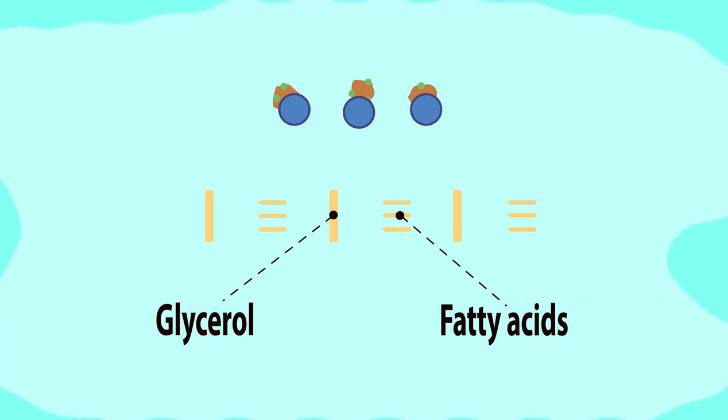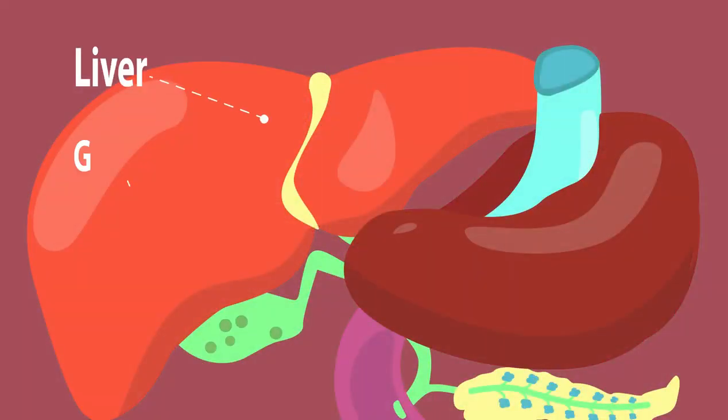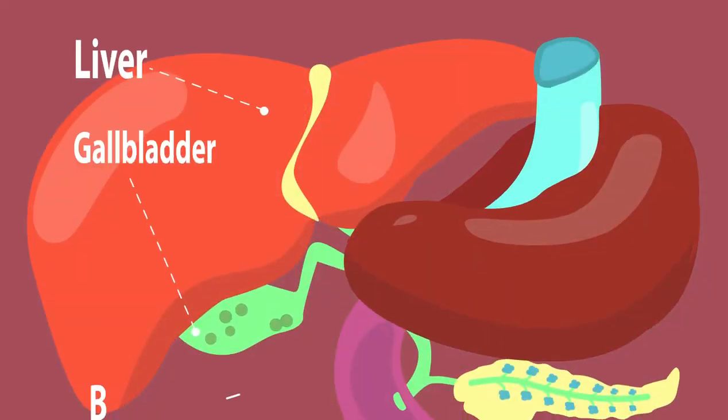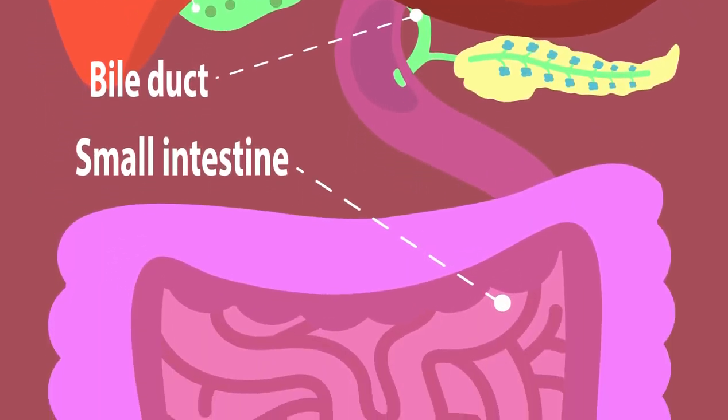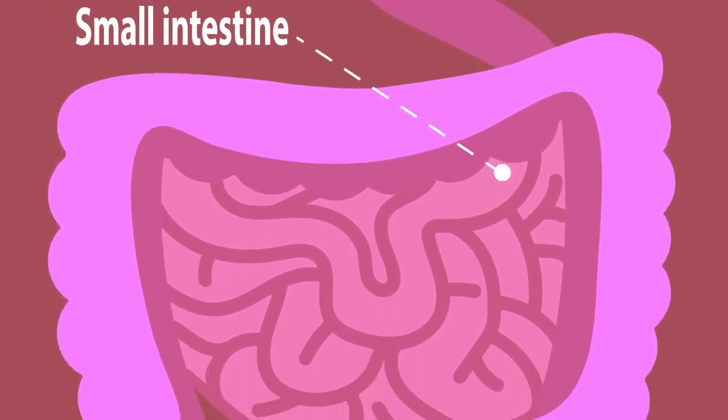The bile is produced in the liver and stored in the gallbladder. It's released down the bile duct into the small intestine from the gallbladder. Not only does the bile increase the surface area of the lipids, it also has another great quality.